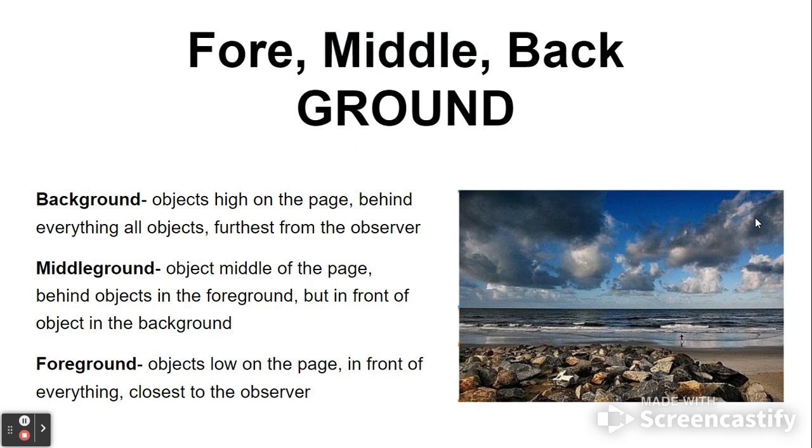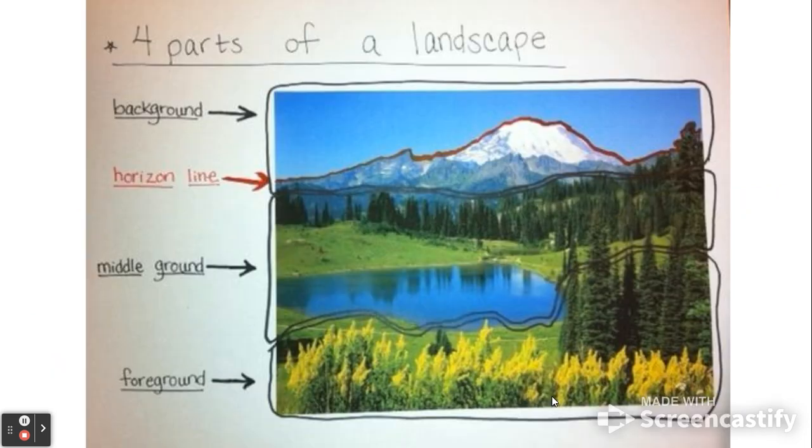Foreground, middle ground, and background. The background are objects that are highest on the page and behind everything. And it's furthest from the observer. An example of something in the background would be these clouds, maybe the sky. The middle ground are objects in the middle of the page, behind objects in the foreground, but in front of objects in the background. So that might be an example of kind of like the ocean or the waves here. And the foreground are objects low on the page and in front of everything closest to the observer. That might be considered the beach. So if we break this landscape down in different parts, things that are lowest in the page, foreground, things that are in the middle of the page, middle ground, things that are in the background are highest on the page. And the line that separates the ground from the sky is the horizon line.